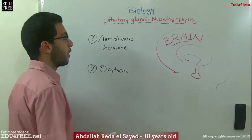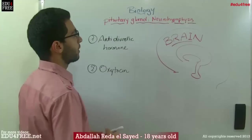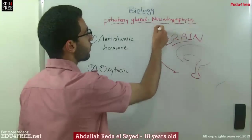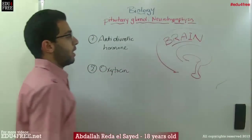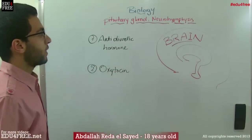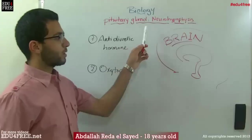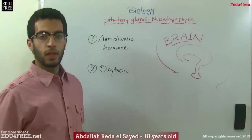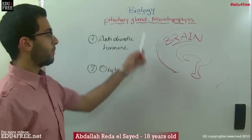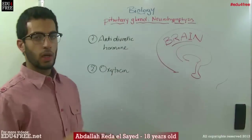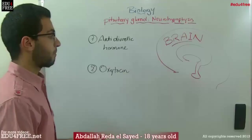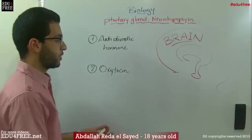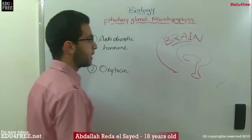This one, the posterior lobe, is called the neurohypophysis. The hormones secreted by the neurohypophysis are not directly produced from it.